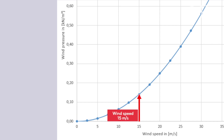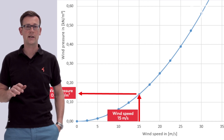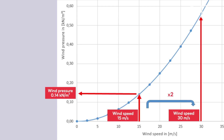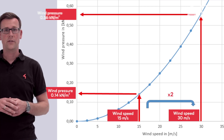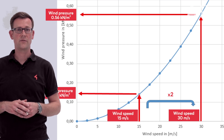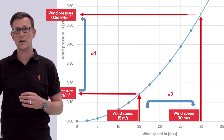At 15 meters per second, for example, the wind pressure is 0.14 kilonewton per square meter, which corresponds to approximately 14 kilogram per square meter. If the wind pressure is calculated for 30 meters per second, the resulting value of 0.56 kilonewton per square meter is four times higher.